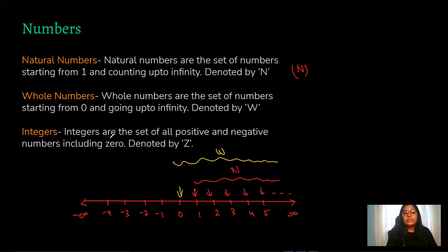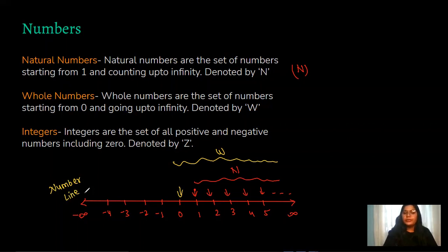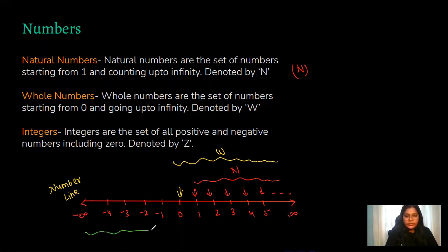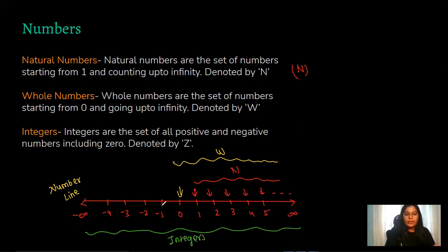Now talking about integers — integers are the set of all positive and negative numbers including zero. On the number line we have negative numbers as well as positive numbers, and zero as well. All the positive numbers, all the negative numbers, and zero together are called integers. Only the values like zero, minus one, minus two — not anything in between — going from negative infinity to positive infinity.